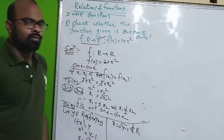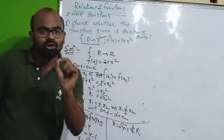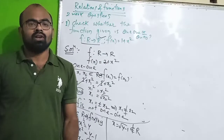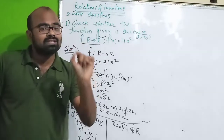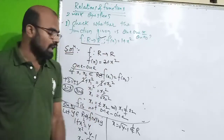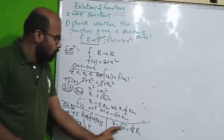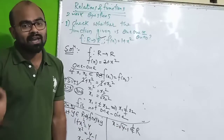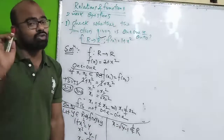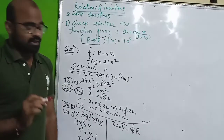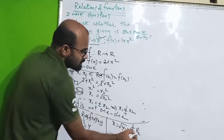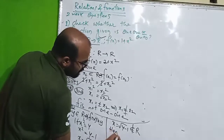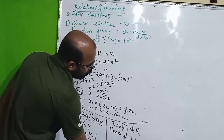Note that the codomain is the real numbers set. But root of y minus 1 does not always belong to R. For example, if y equals 0, then x equals root of 0 minus 1, which is root of minus 1 — and root of a negative number does not exist in the real numbers. So x does not belong to R, and hence f is not onto.